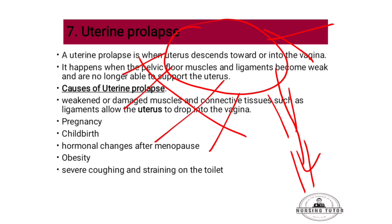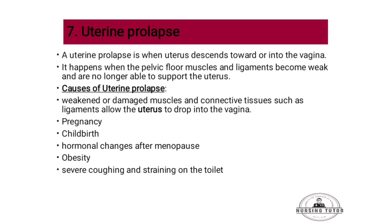It happens when the pelvic floor muscles and ligaments become weak and are no longer able to support the uterus. This weakening means the muscles and connective tissue cannot keep the uterus in position, and the ligaments allow the uterus to drop into the vagina.